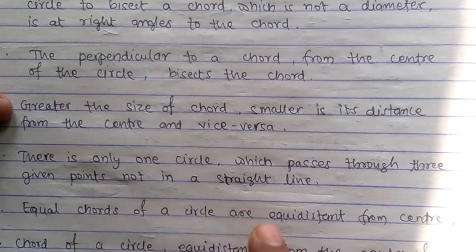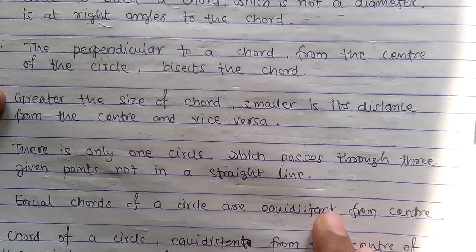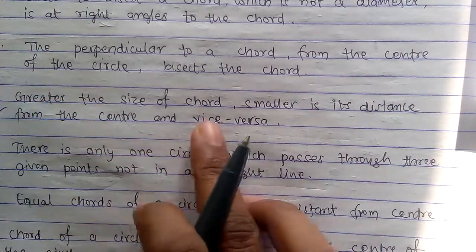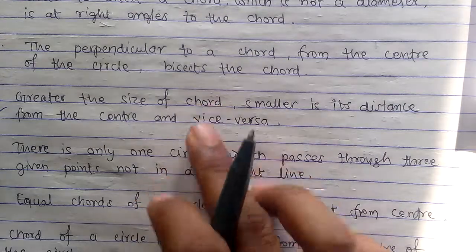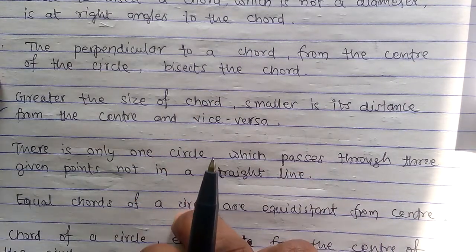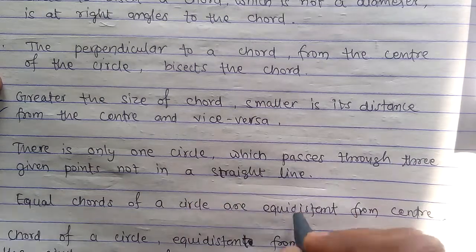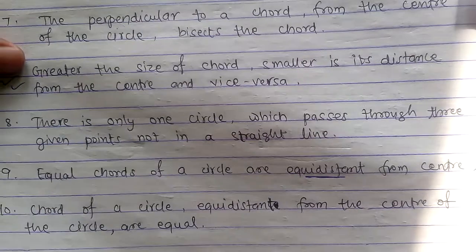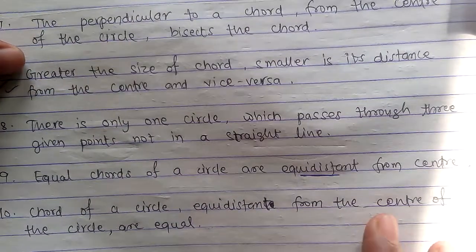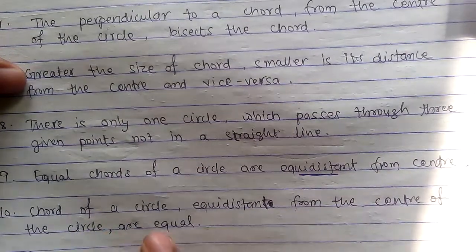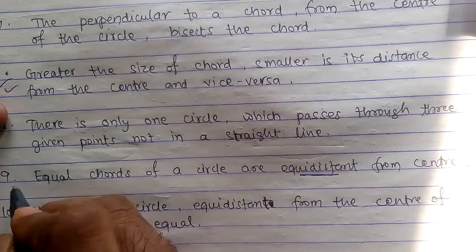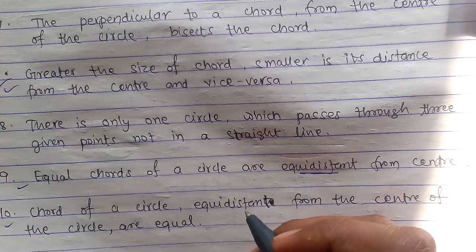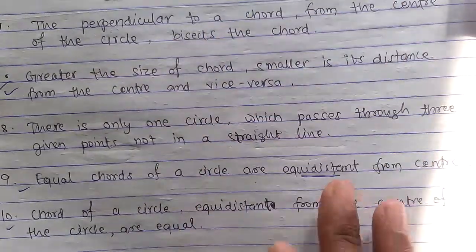Point number nine: Equal chords of a circle are equidistant from center. If chords are equal, the distance from center will be equal - equidistant. And the last one: Chords of a circle equidistant from center are equal. This is the reverse - if distance from center is equal, the chords will be equal.